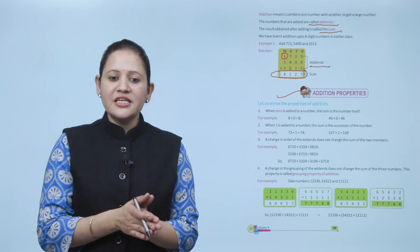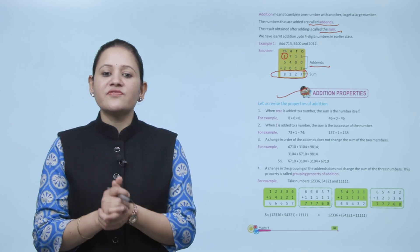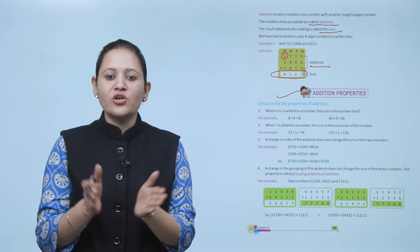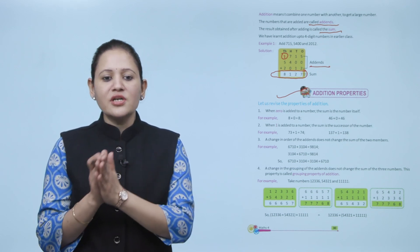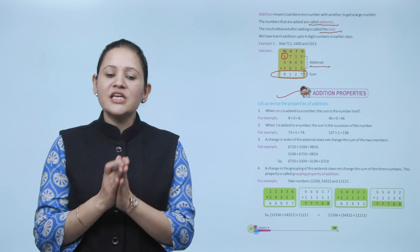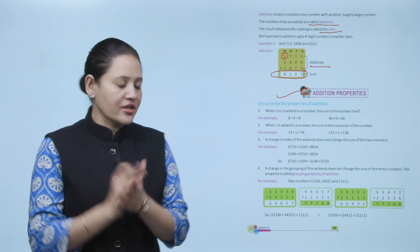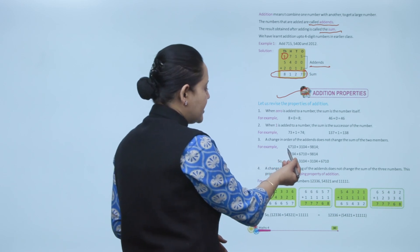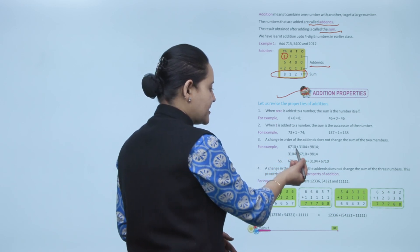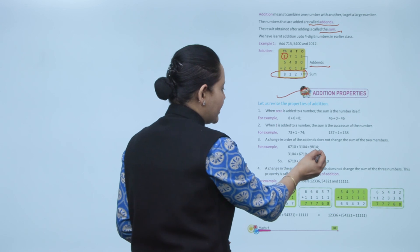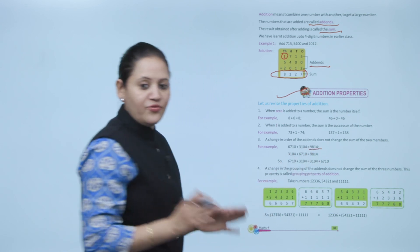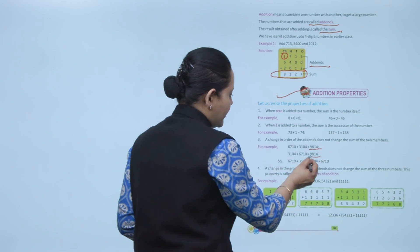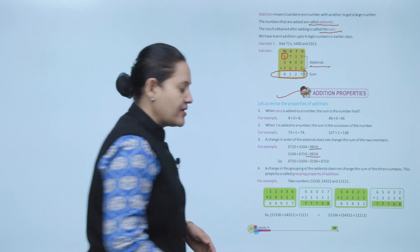Third, the change in the order of the addends does not change the sum. We can add two or more numbers in any order and the sum will remain the same. For example, 6710 plus 310 plus 3104 gives 9814. If we change the order of the addends, the sum is still the same.